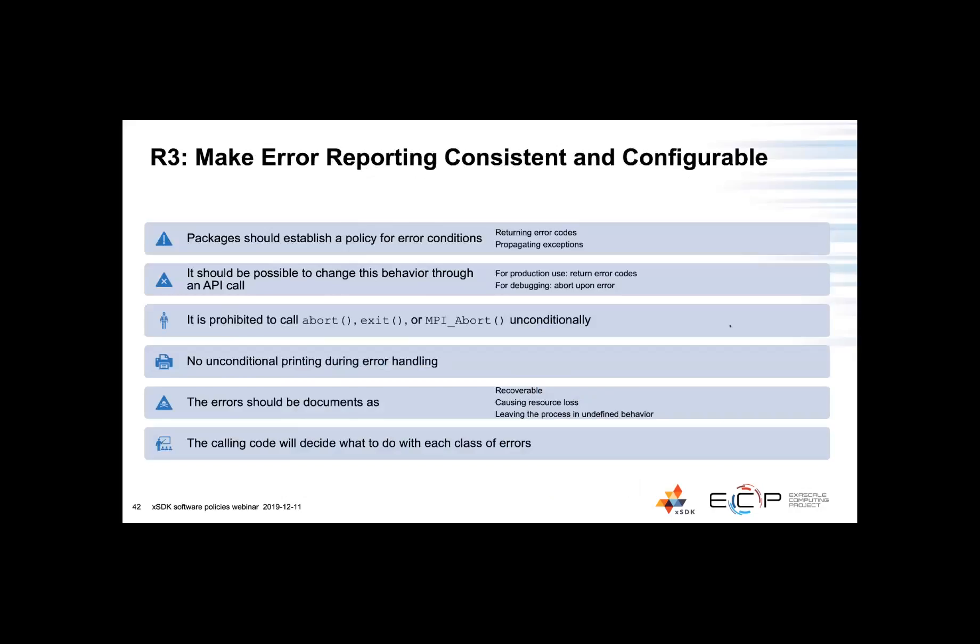Moving on to recommended policy number three. We ask to have the error reporting consistent and configurable across the entire package. We ask that functions return error codes or they propagate exceptions. There should be ability for the user to programmatically change the mode of error reporting. For example, for production runs the user would likely just enable silent treatment of return codes, whereas for debugging the user might ask to have any error cause immediate abort so the debugger can be initiated and the problem can be found.